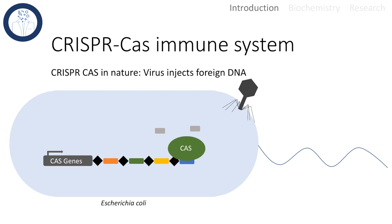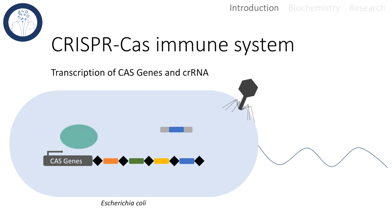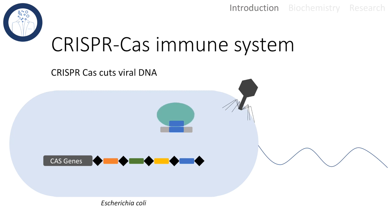CRISPR originally is an adaptive immune system, meaning it can recognize prior infections and respond to them. If the viral infection takes place a second time, Cas genes are transcribed and translated into Cas proteins again in response. Now also the CRISPR RNA is transcribed. Together they form a complex and, with help of the CRISPR RNA, target the foreign DNA molecule and cut it to protect from the viral infection.